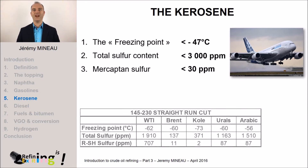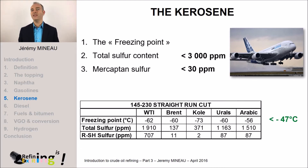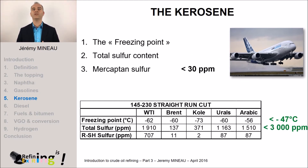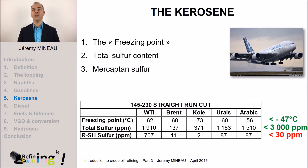If we make a zoom on a straight-run kerosene of several crudes, we see that the freezing point is always lower than minus 47 degrees. Thus, no difficulties in reaching this objective. For the total sulfur, the kerosene cut is generally compatible with the total sulfur constraint of 3000 ppm. But on the other hand, for the maximal content in mercaptans, we see that this is not always the case. Then, the main treatment necessary to produce kerosene consists in removing the mercaptan sulfur.